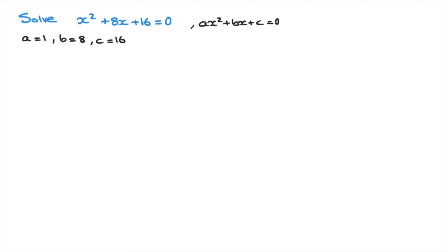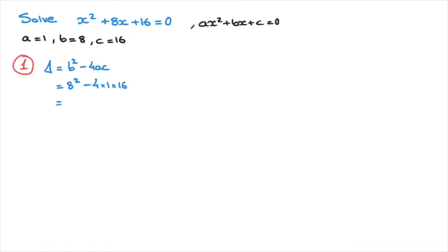To solve this equation we follow our two-step method. Step 1: we calculate the discriminant delta. Delta equals to b squared minus 4ac, where b is 8, a is 1, and c is 16. So that's 8 squared minus 4 times 1 times 16. That's equal to 64 minus 4 times 16, which is also 64. Finally, we can see that delta, the discriminant, equals to 0.